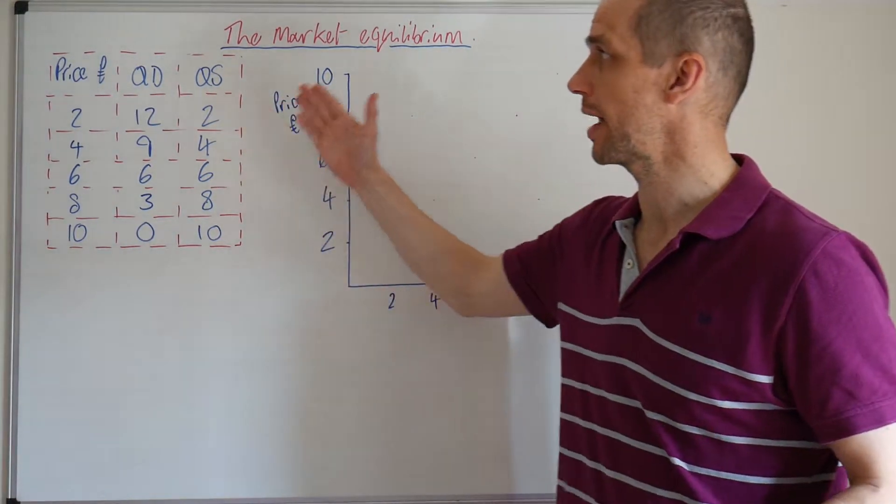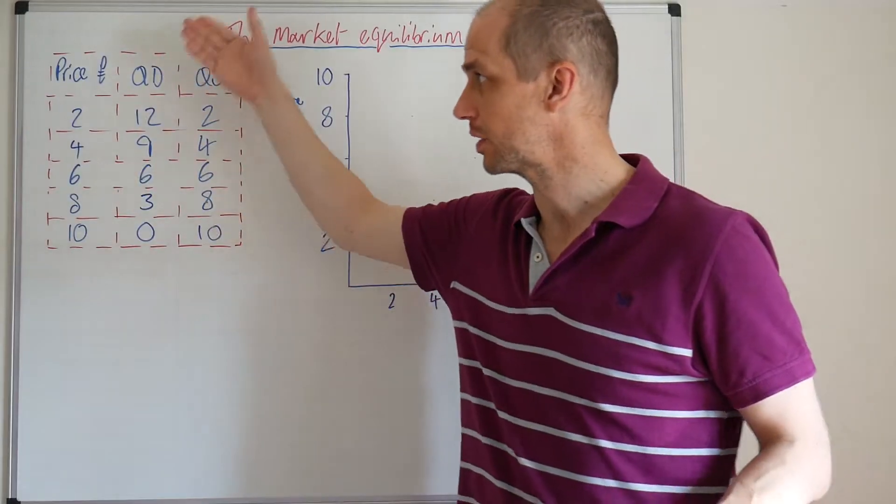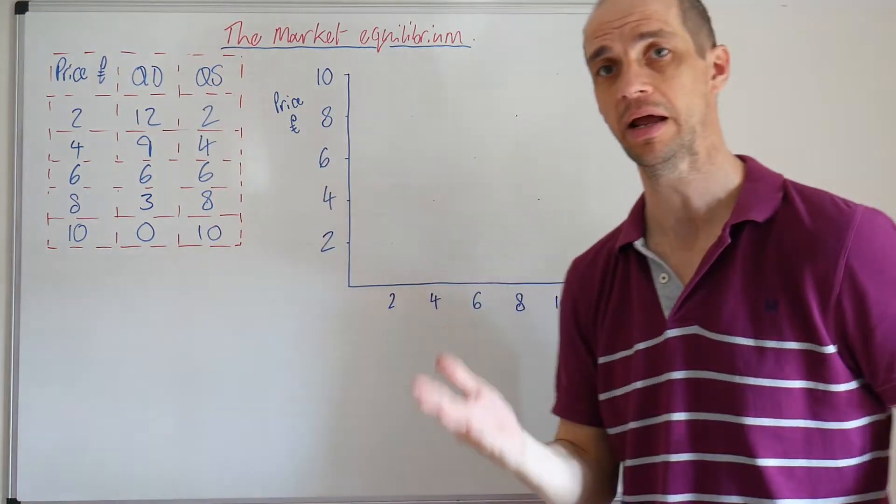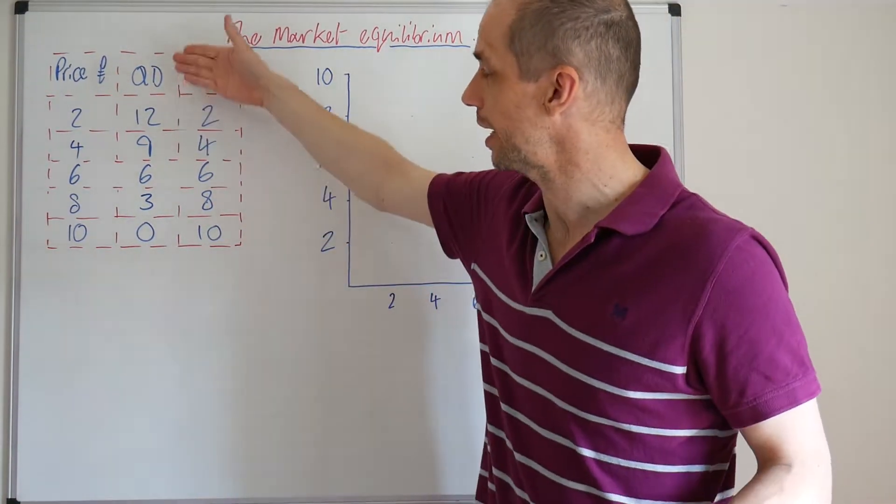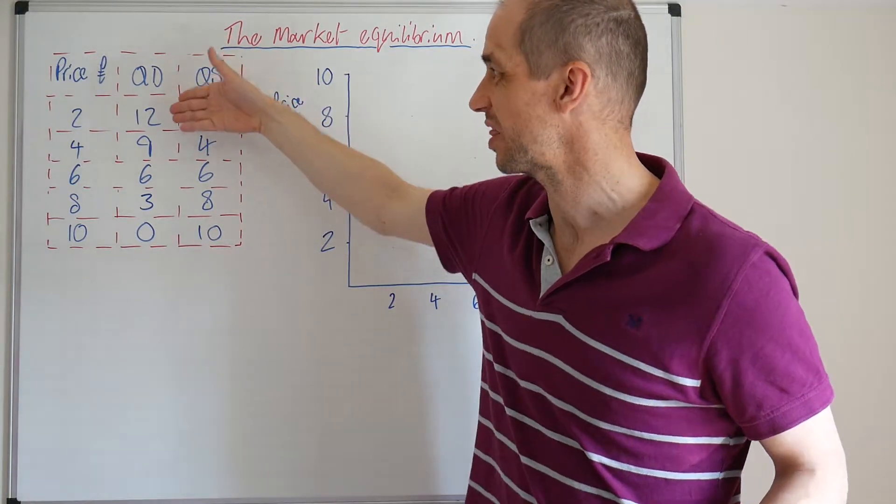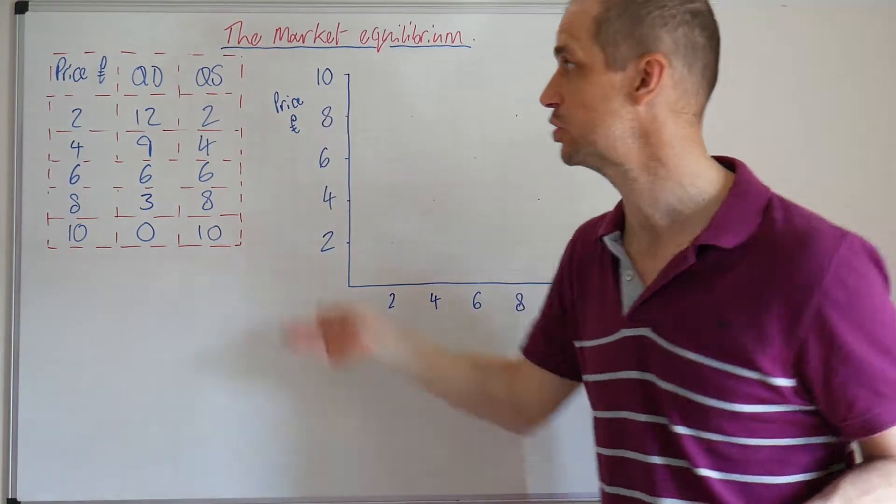Okay, so I've just drawn out a nice simple table here illustrating price level rising from two right through to ten pounds for each unit. Meanwhile, we can see the quantity demanded. This could be in thousands of units rather than individual units here.